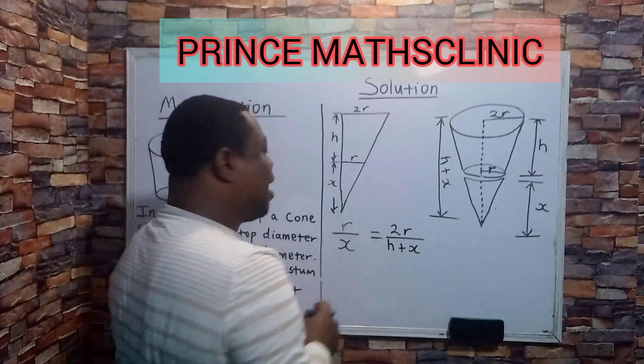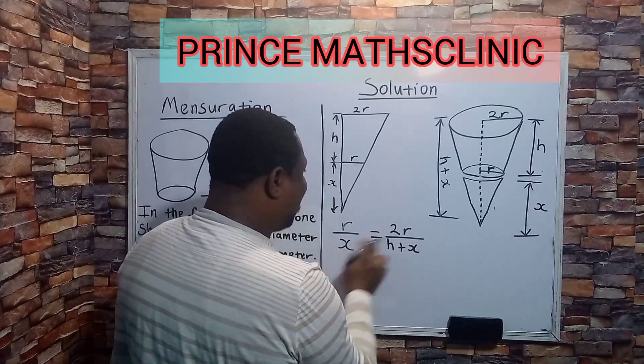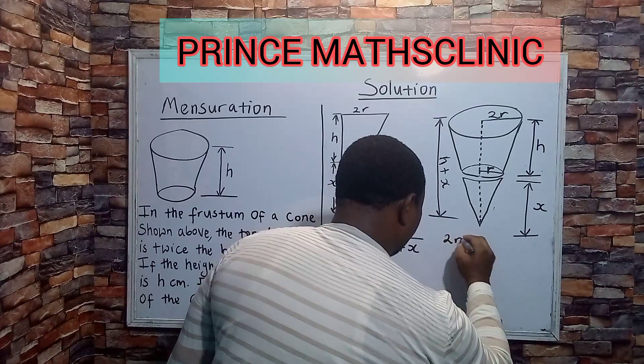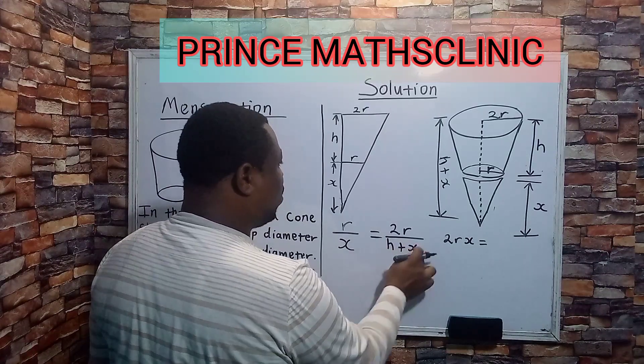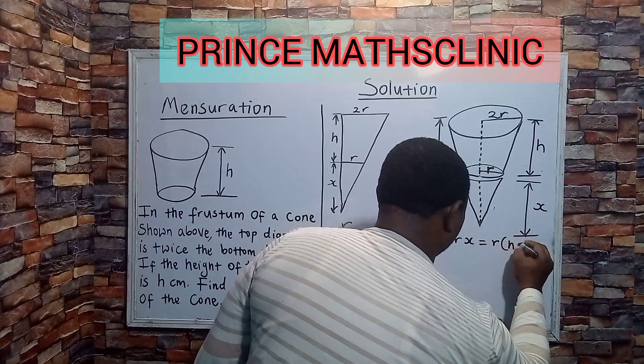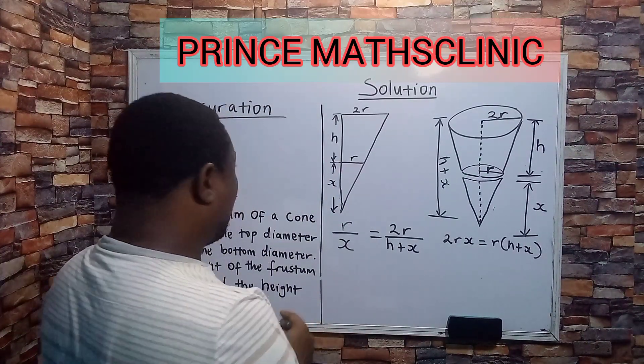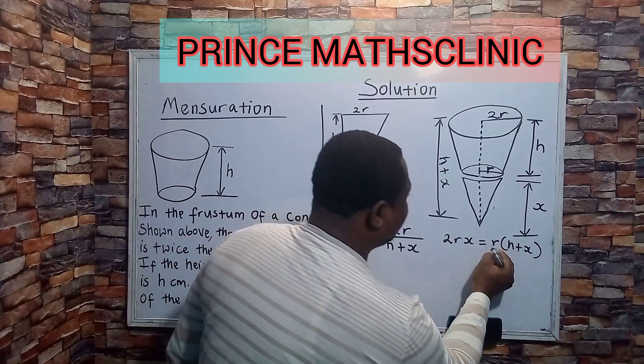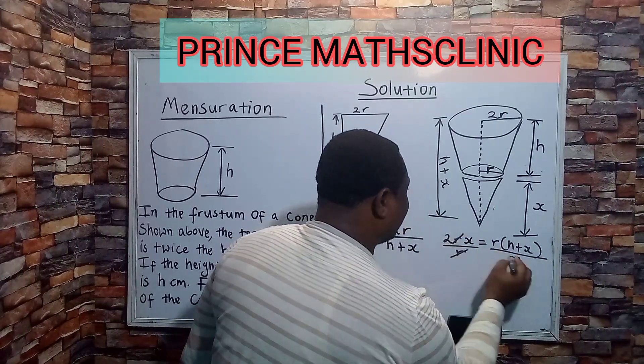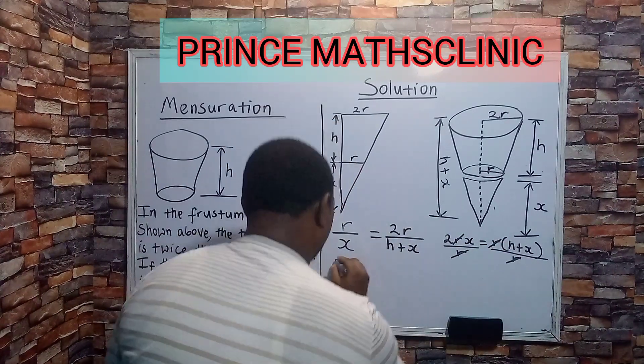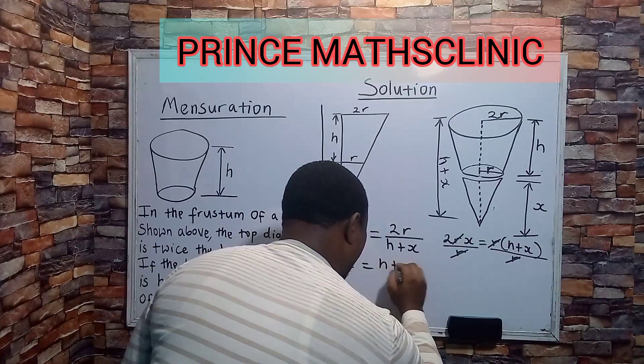Now I want to further evaluate this or simplify. If you cross multiply, you have 2rx equating r multiplied by h plus x. Now remember, I am looking for height, which is h. So I will divide both sides here by r. By r - r will cancel r. r will cancel r, yeah? So I have my 2x to be equals to h plus x.